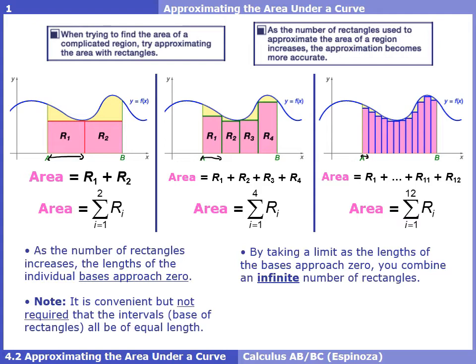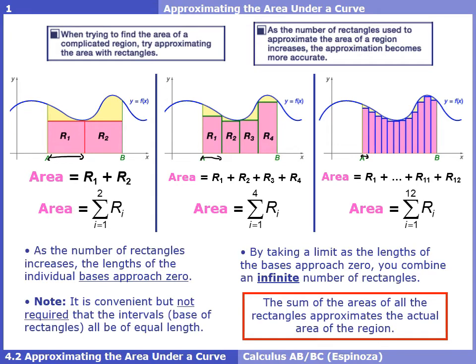One note about problems: it's convenient but not required to have the bases of the rectangles be equal length. In the three examples shown, all bases have equal length, but that's not always the case. To summarize: the sum of the areas of all the rectangles you use — whether 2, 12, or 1,000 — approximates the actual area of the region. It's just an approximation until we put an infinite number of rectangles in, which will be in 4.3.